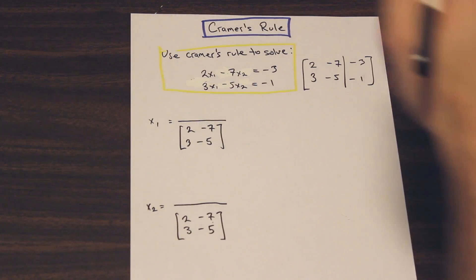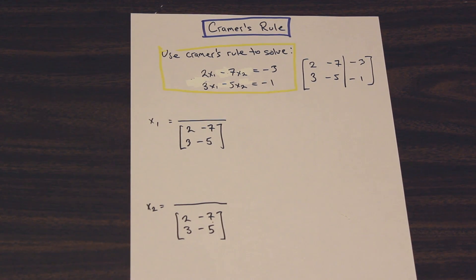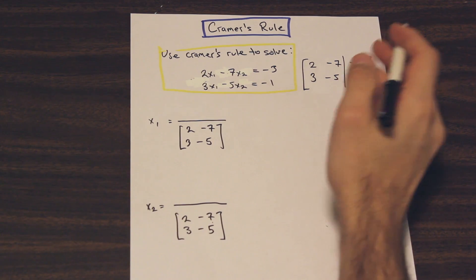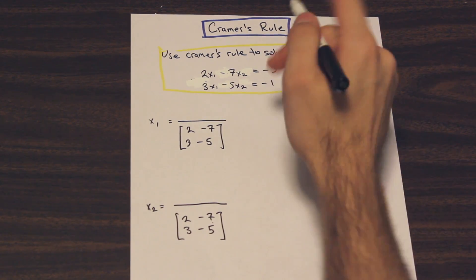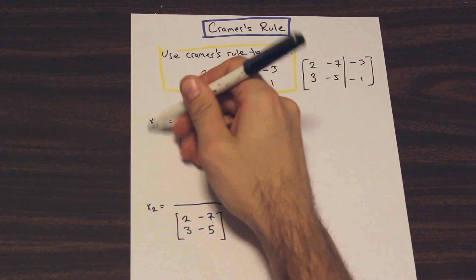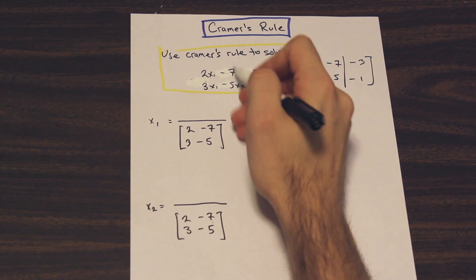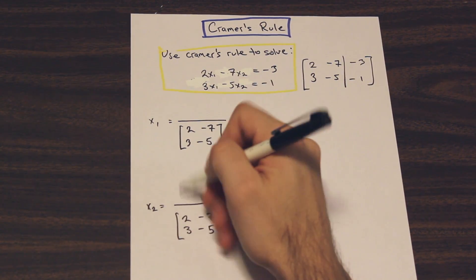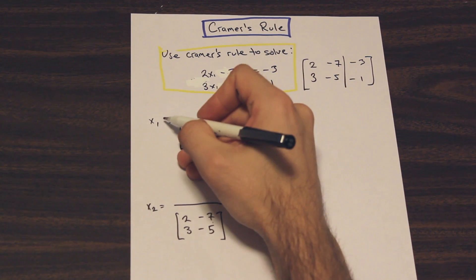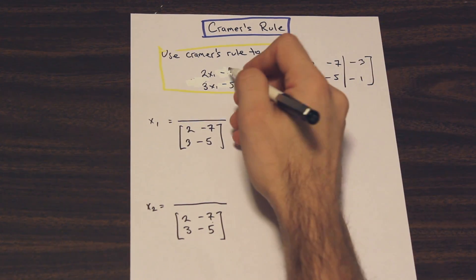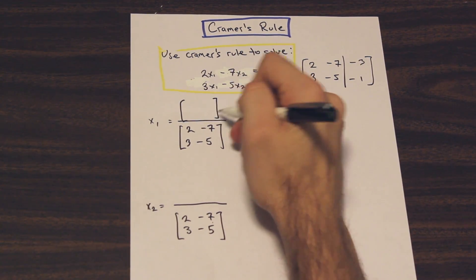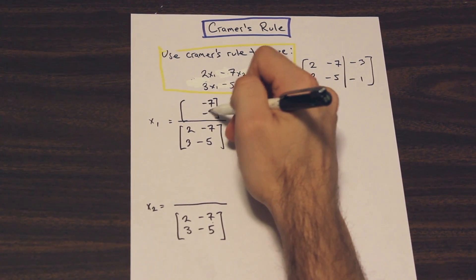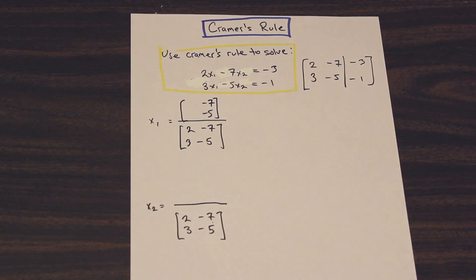So what do we do for the numerators? Well, what we're going to do is for the first one here, you can remember this any way you like, but I like to think that for x1, the second row is going to stay the same, and then for x2, the first row is going to stay the same. So for x1, the second row is going to stay in its place on the right side of the matrix. That's just the way I like to kind of visualize this.